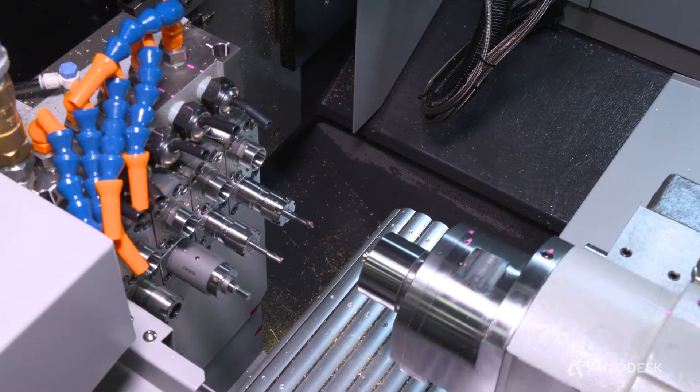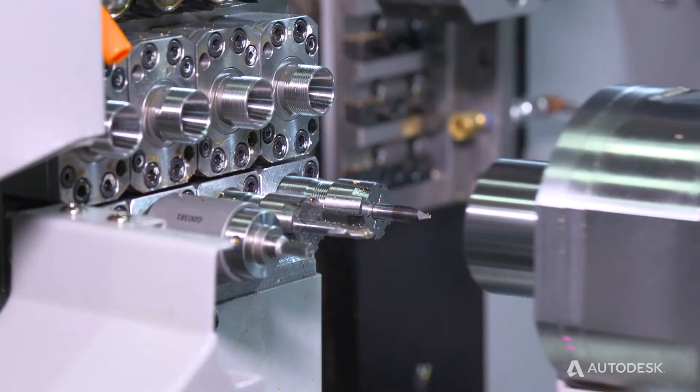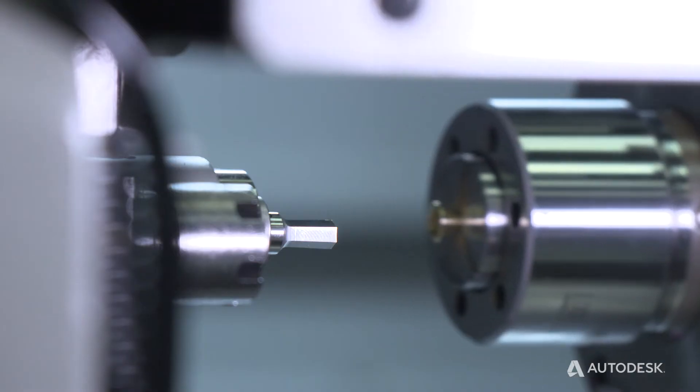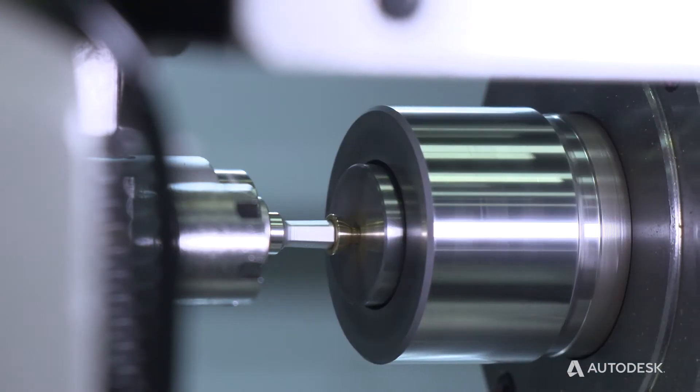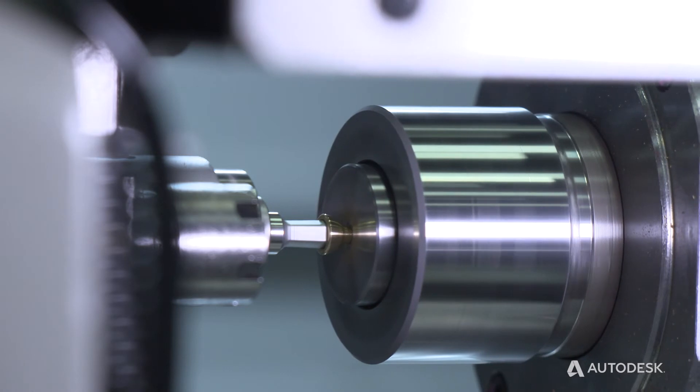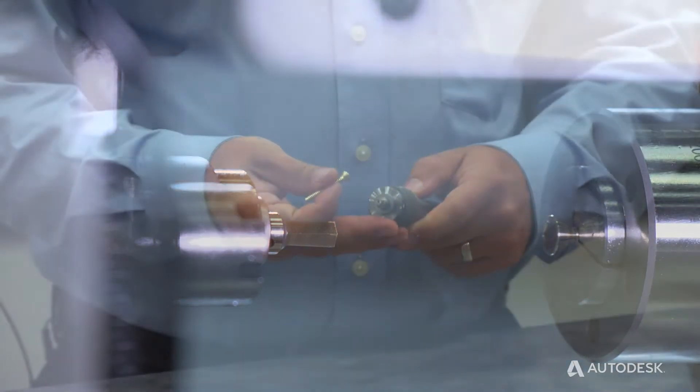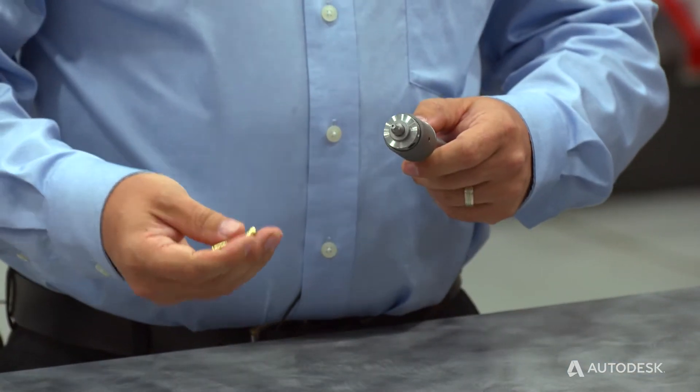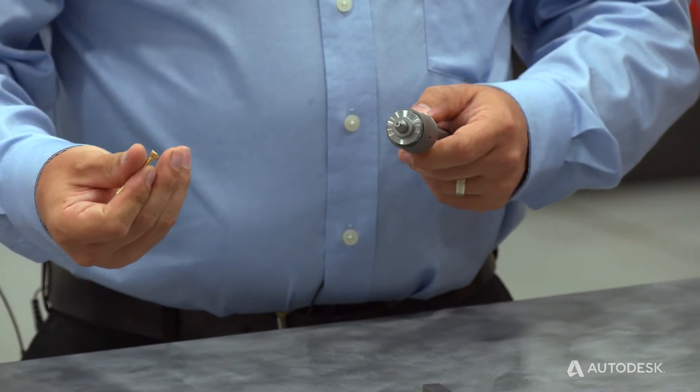Basically any screw that you might manufacture in your CNC Swiss needs to have some form of a drive feature. So what the rotary broach does is allows you to cut and shape the drive feature into the end of the workpiece while the spindle is rotating. This saves you a lot of time, you get very clean, finished forms.